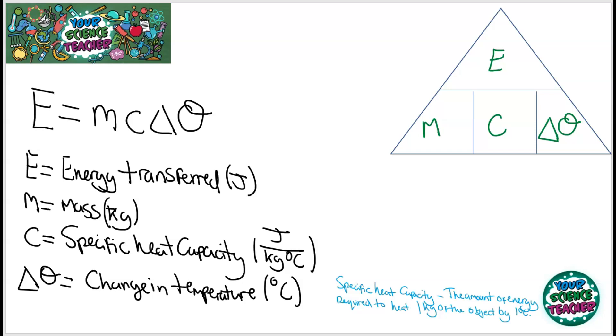So, if you were to rearrange that in order to make specific heat capacity the subject of the equation, what you do is you cover up specific heat capacity, so C equals E divided by M times delta theta, which is the change in temperature. And that's how you calculate specific heat capacity of an object.